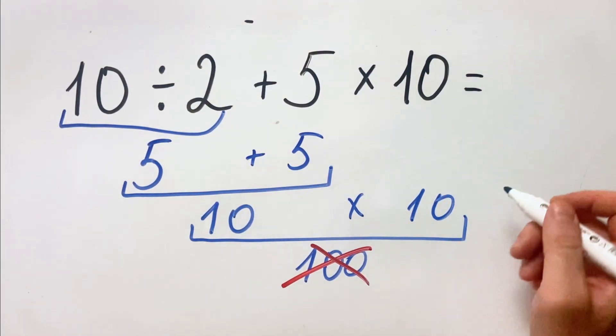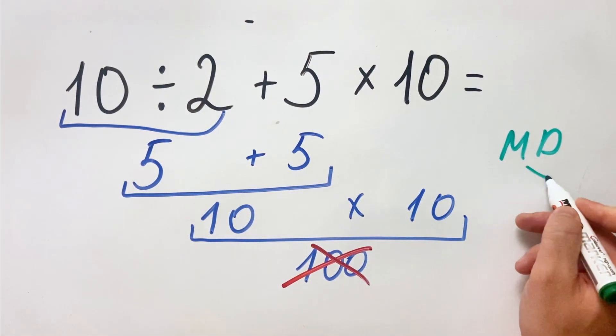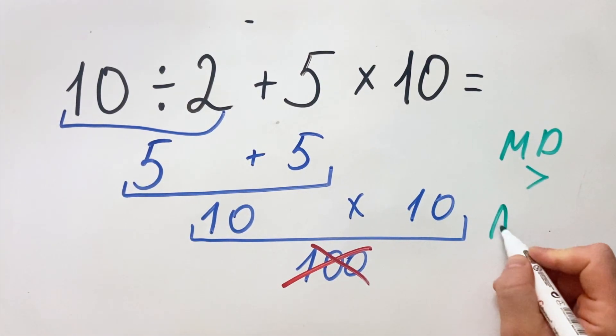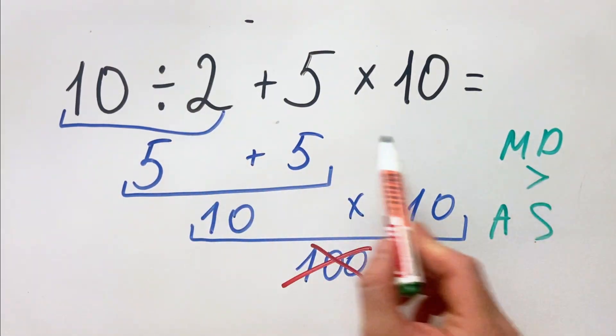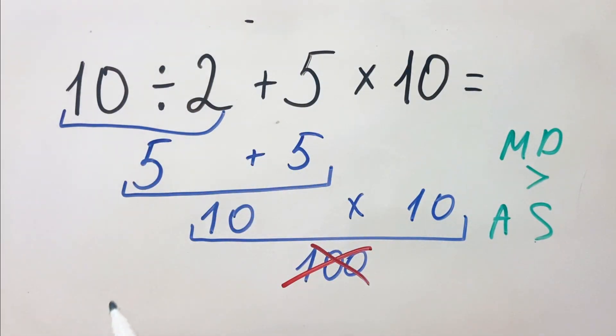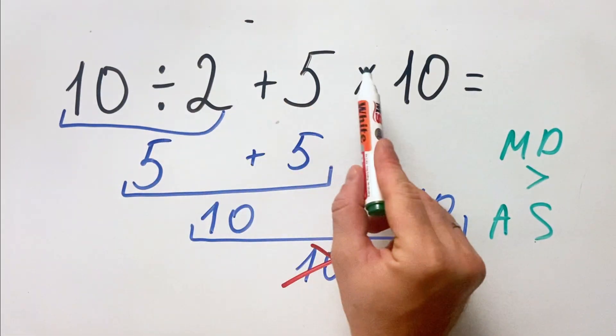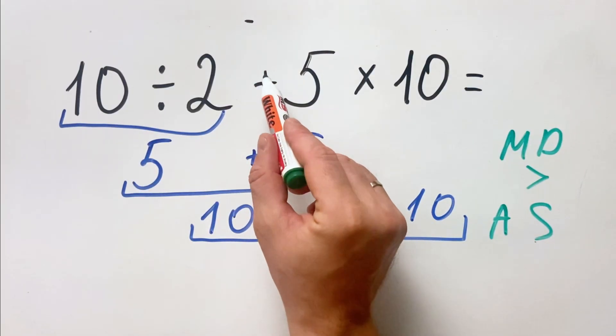Why is this answer not correct? Because according to the order of operations, multiplication and division have higher priority over addition and subtraction. In this case, we must first prioritize multiplication and division, then we do the addition. So we cannot do it just from left to right because division and multiplication, as we saw here, have higher priority over addition.